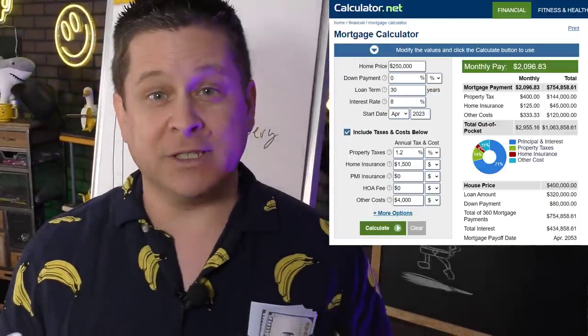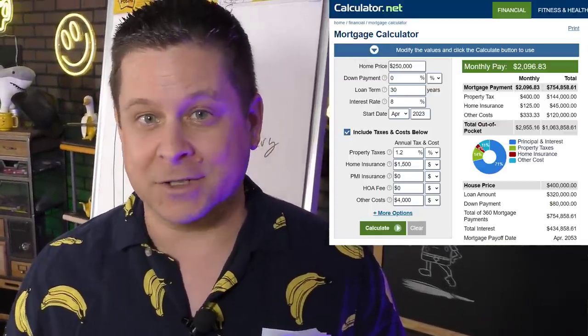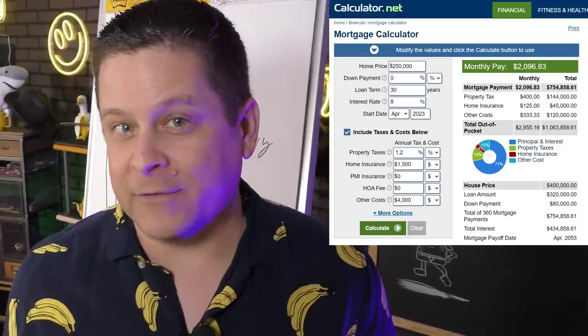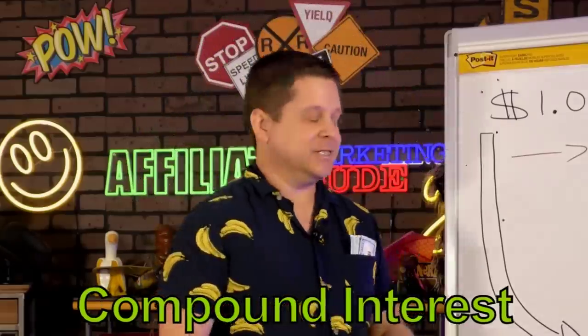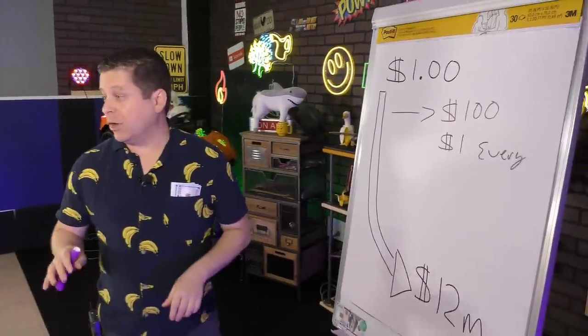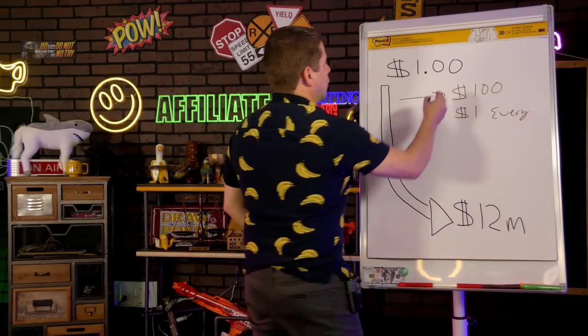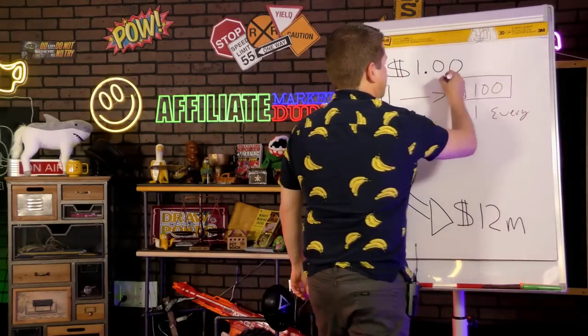You ever wonder why your mortgage is so expensive and you end up paying $750,000 for a house that was only $225,000? It's compound interest. And this starts to build and grow in a crazy way.